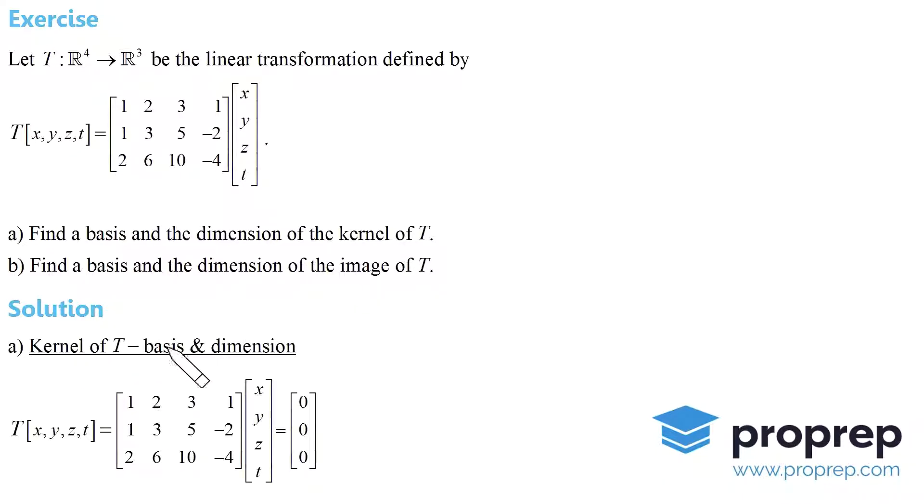We'll start with the kernel. The kernel of T is all the vectors in R⁴ that T takes to zero in R³. Essentially, this matrix product has to equal the zero vector in R³: (0, 0, 0).